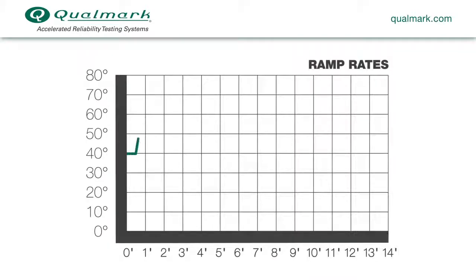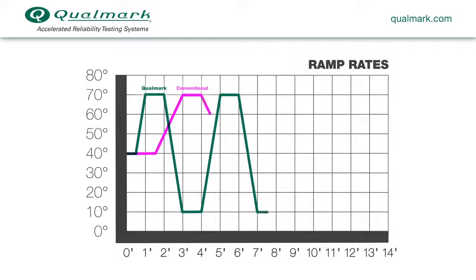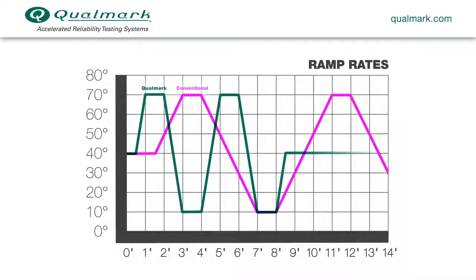ACCESS offers ramp rates up to 60 degrees Celsius per minute, far faster than the conventional 5 to 20 degrees Celsius per minute rates. The benefits are two-fold. First, faster ramp rates mean thermal cycles complete faster. Second, quicker temperature transitions induce more thermal stress and therefore fewer cycles are needed compared to an equivalent test with slower ramp rates.